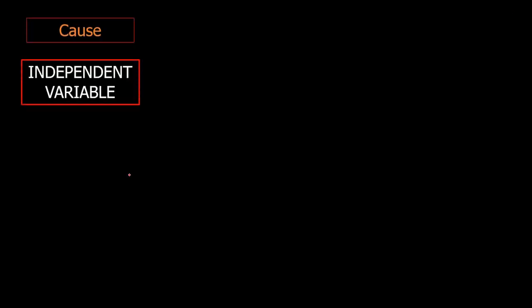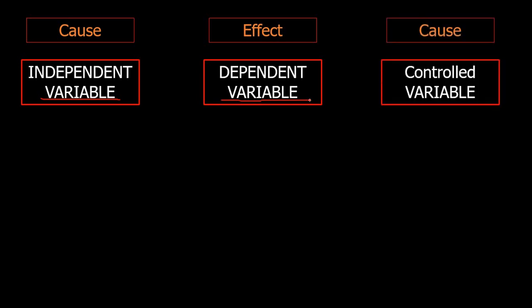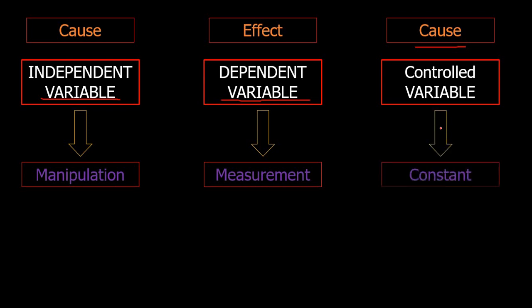The independent variable is the one that causes an effect — it's the reason for a change. The effect would be the dependent variable. So when you change something, that's the independent variable, and it will produce an effect, the dependent variable. The controlled variable, although it can cause an effect, is kept constant by scientists to prove or measure what the experiment intends to measure. The independent variable is the one you change, the dependent variable is the one you measure, and the controlled variable is the one you keep constant.